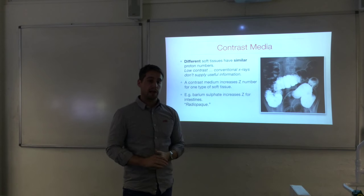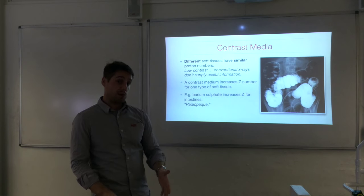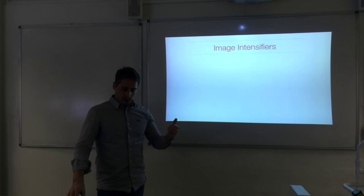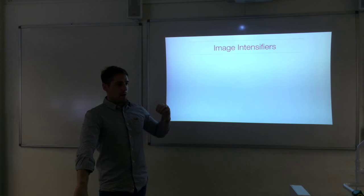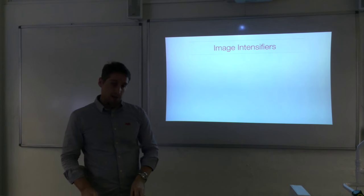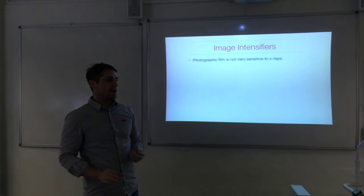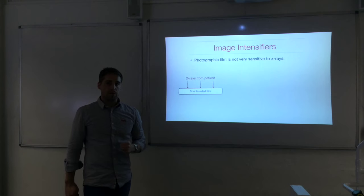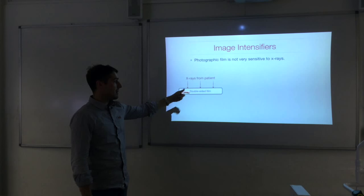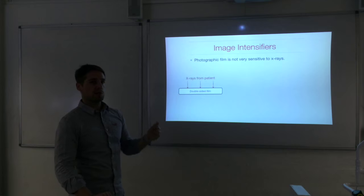Contrast media give you more cases where conventional x-rays can be used, which is an advantage because they are cheap and quick. The reason the first x-ray by Röntgen took 15 minutes is that photographic film is not very sensitive to x-rays — many pass through it — so it takes a long time to get significant darkening of the film.